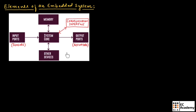A typical embedded system is shown in this figure. The embedded system consists of a system core, input ports, output ports, memory, and other peripheral devices. Along with this, it has a communication interface.